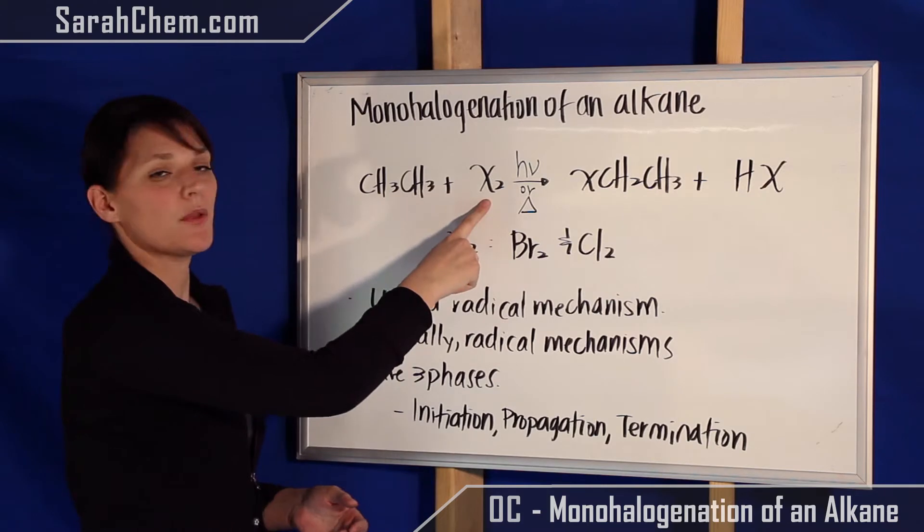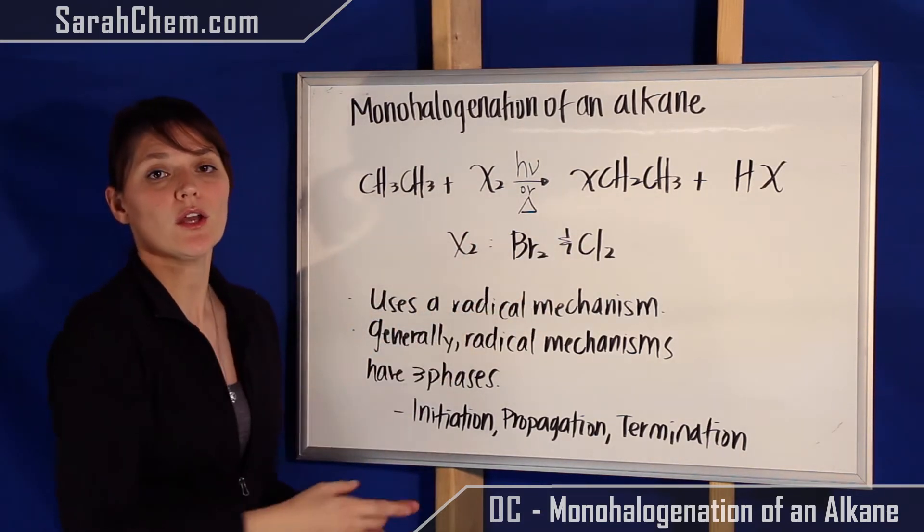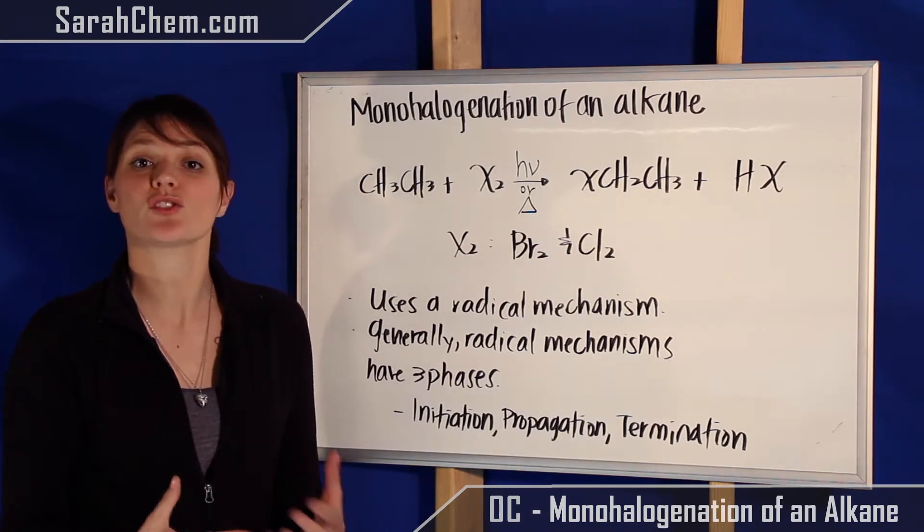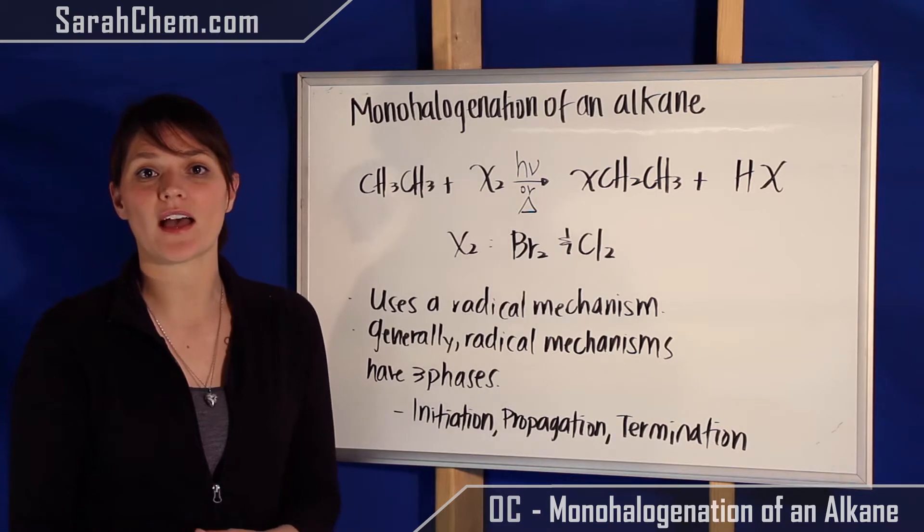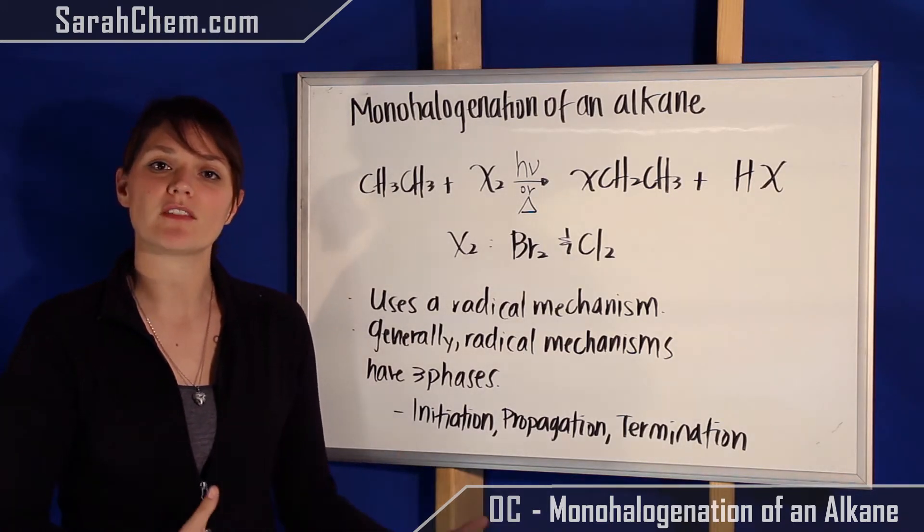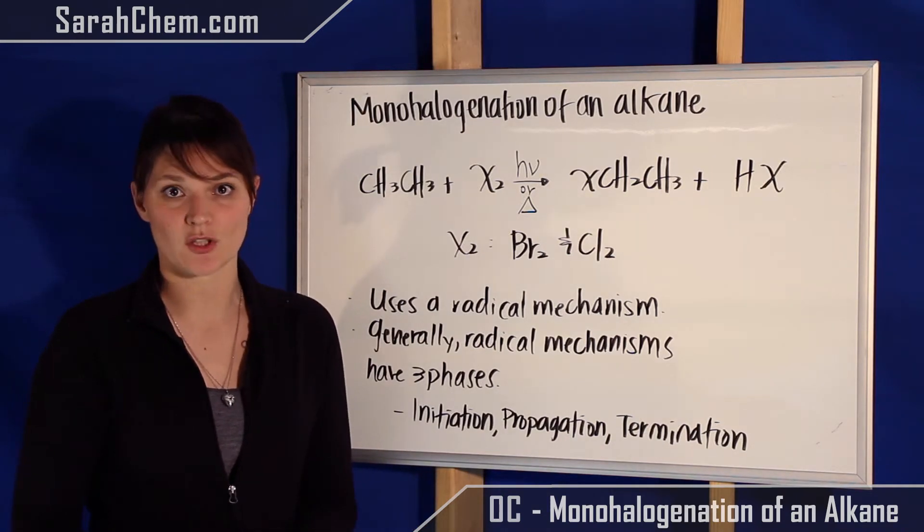And we're going to be reacting with X2, where X2 represents either bromine or chlorine. We're not going to see a reaction happening with F2 because it's highly exothermic and thus too reactive, and dealing with I2 is very endothermic, not very reactive. So when you have these kinds of problems, you're pretty much only going to see Br2 and Cl2 as your options.